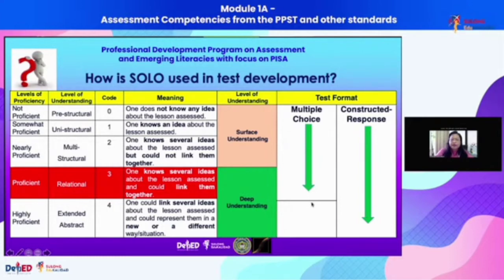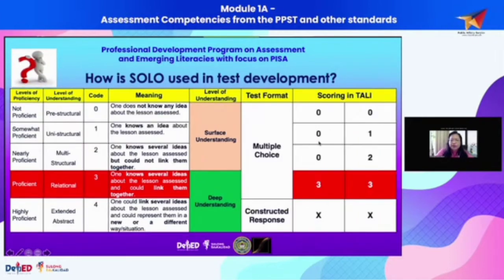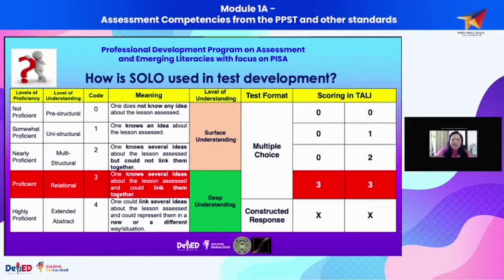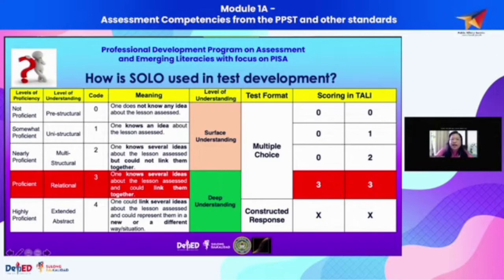This is how we scored the test: zero if you chose a response at pre-structural to multi-structural — that represents the traditional binary scoring. The highest score given to an item representing the relational level — indicative of proficiency — was three points. So for 25 items, the maximum total is 75 points.